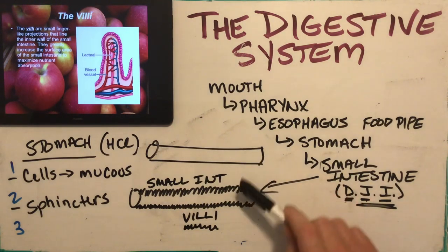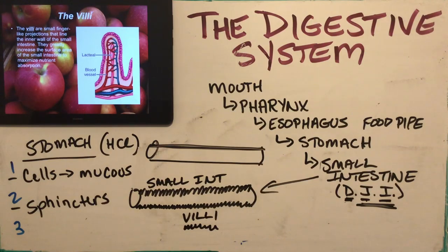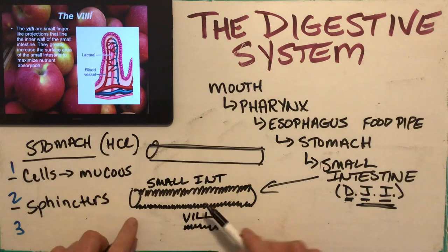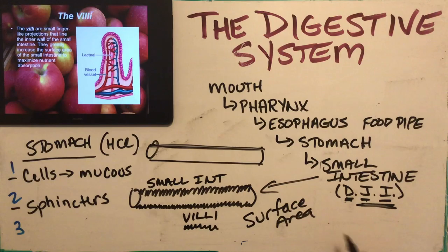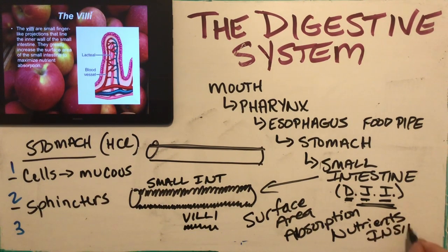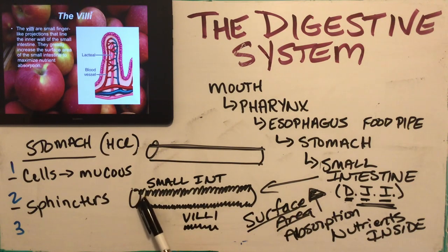Think about two tubes of roughly the same length: a smooth tube versus one with all those ridges and folds. If you straightened out all those ridges, the villi tube would be much longer — it increases the surface area inside. We want to maximize surface area because the more surface area we have for absorption, the more nutrients we can take in. The food drags along a much longer line of tube and many more nutrients can be absorbed.